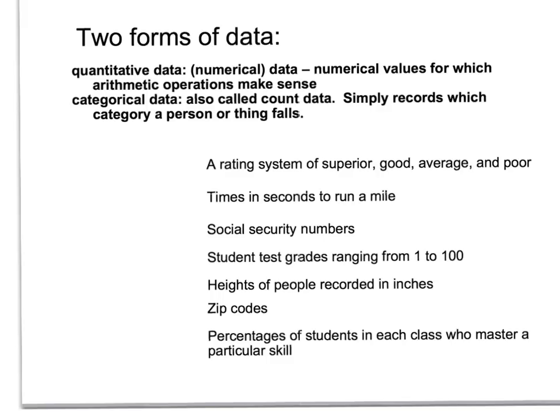Here are some examples to figure out which category each one falls into. A rating system of superior, good, average, or poor — you're putting whatever you're evaluating into a category. So this would be categorical.